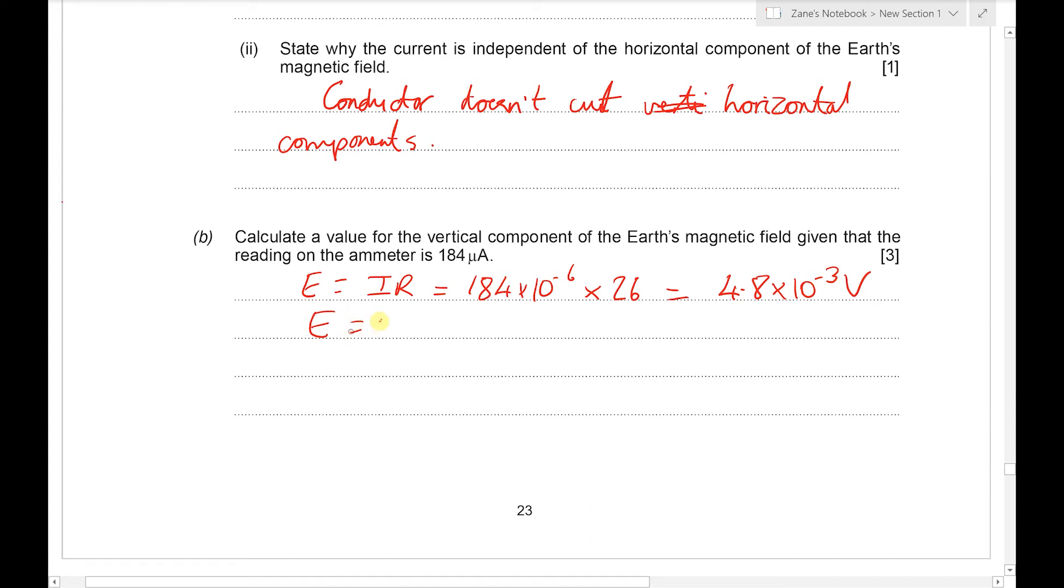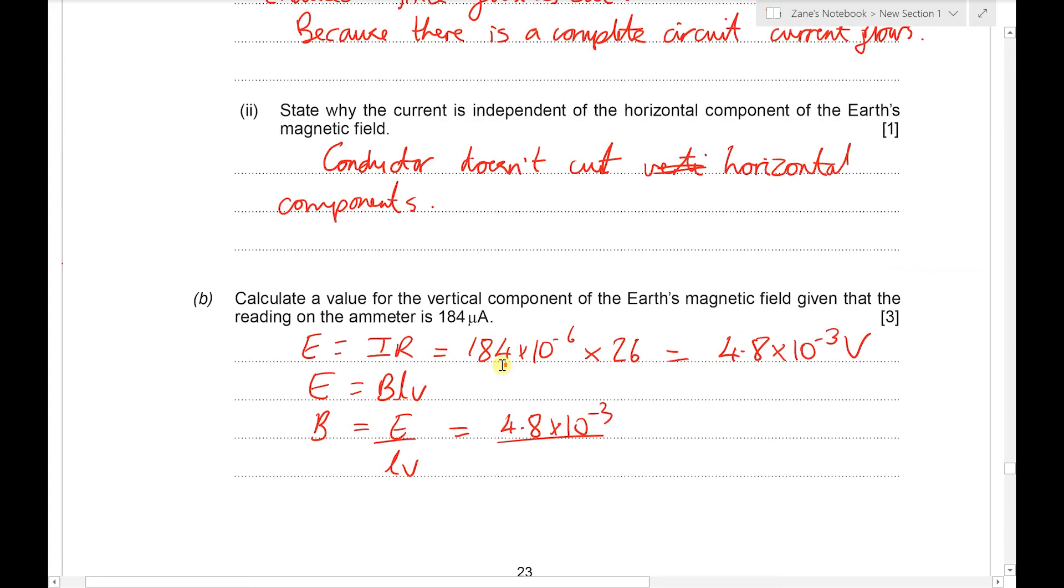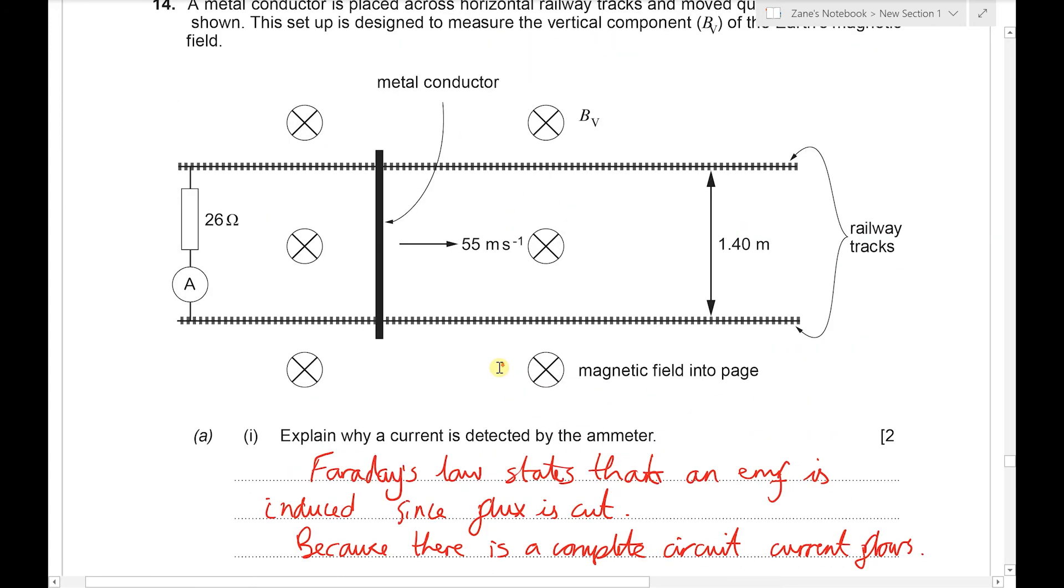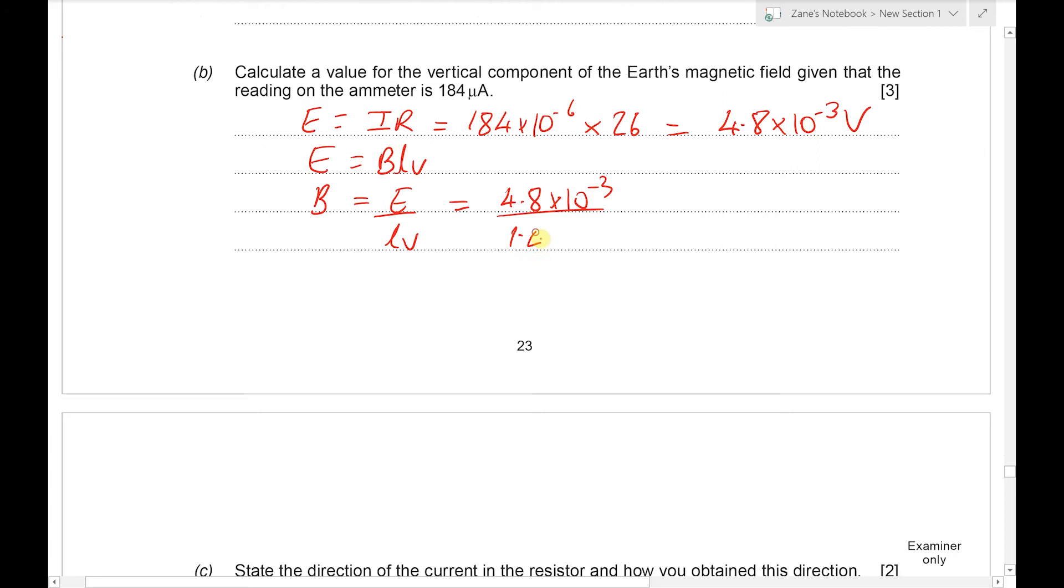Then we could use the formula E equals BLV. Remember that's not given in the data book but the examiners don't mind you using it. It's also worthwhile practicing the derivation of that, but for the moment let's just use it. So B is going to be E over LV, so 4.8 times 10 to the minus 3, length was 1.4 meters and V was 55 meters per second. And that will give us near enough 62 microteslas.